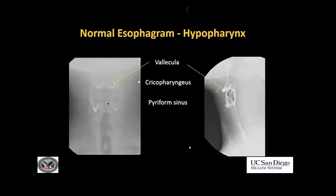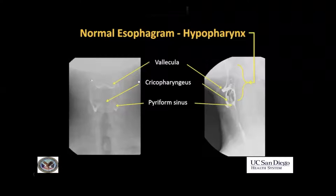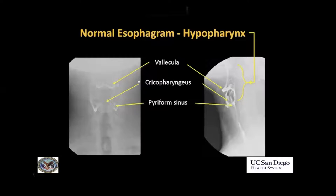So we'll start by talking about the esophagus. First of all, let's just have a look at the normal anatomy. In the upper esophagus, you have paired valleculae and bilateral piriform sinuses seen here. Valleculae are well seen on the lateral view; piriform sinuses are less well seen. This whole area is the hypopharynx.